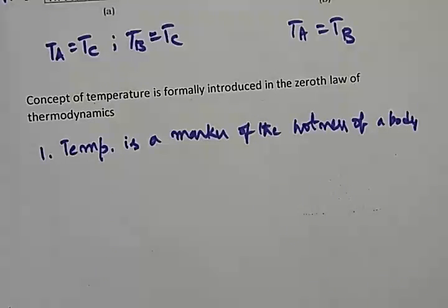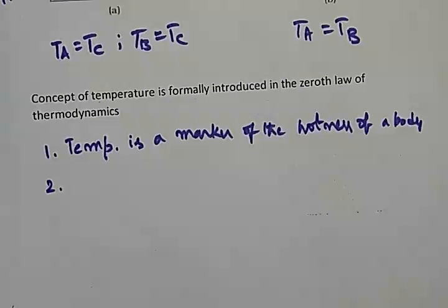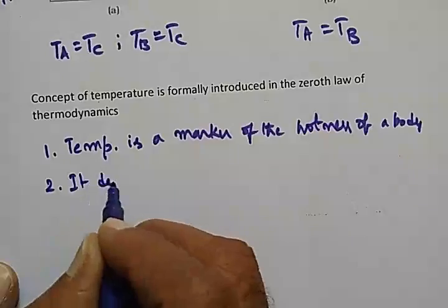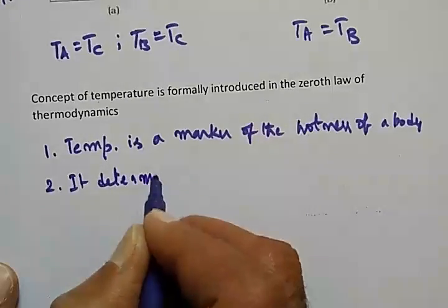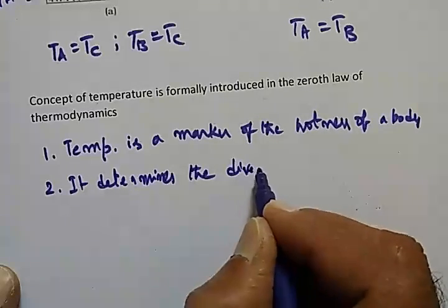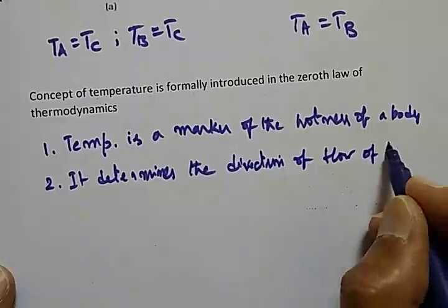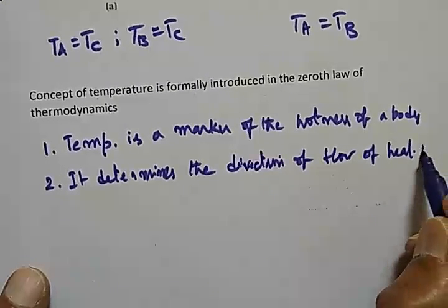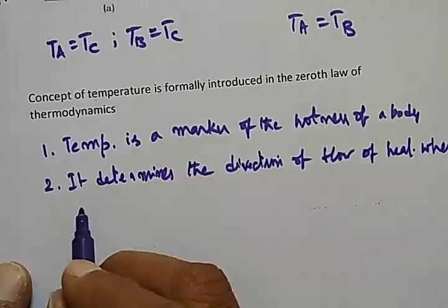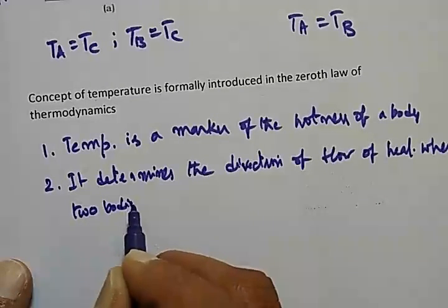We can say one body is hotter than another. Second: temperature determines the direction of flow of heat when two bodies are placed in thermal contact.